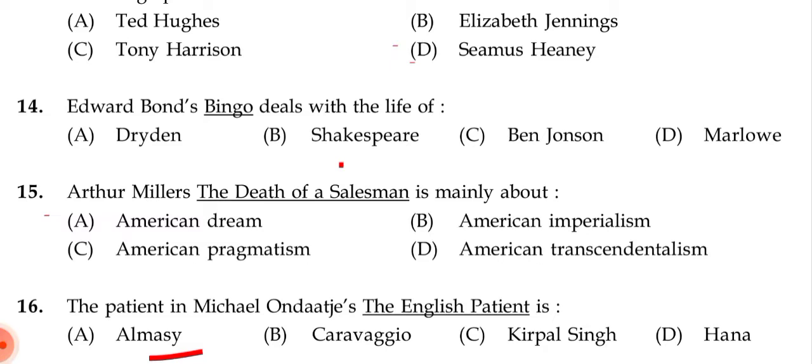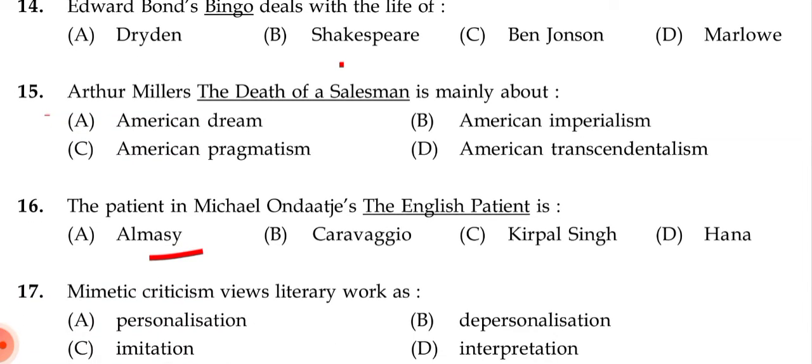Next question: Arthur Miller's 'Death of a Salesman' is mainly about — (a) the American dream, (b) American imperialism, (c) American pragmatism, (d) American transcendentalism. The correct answer is (a) the American dream.